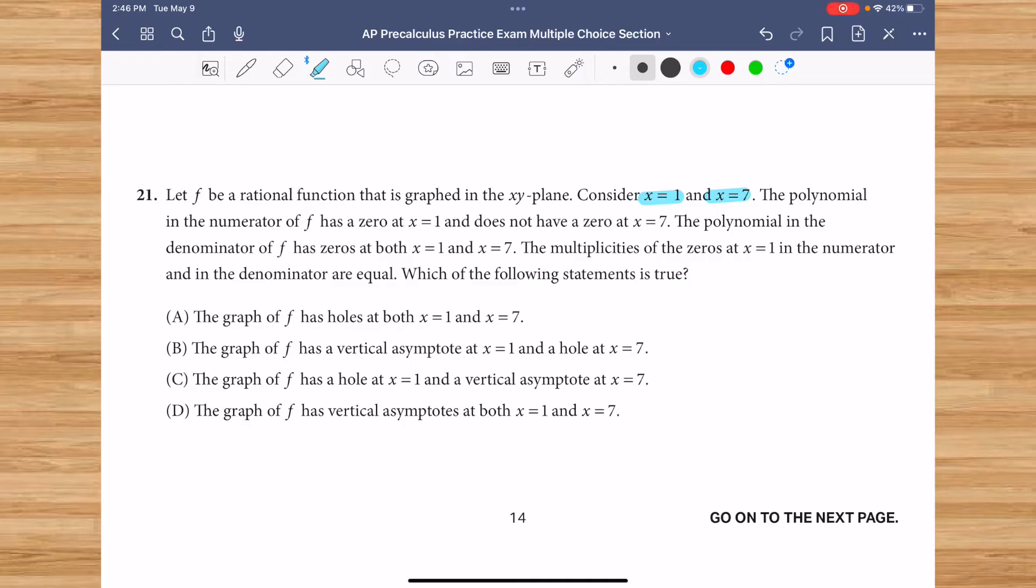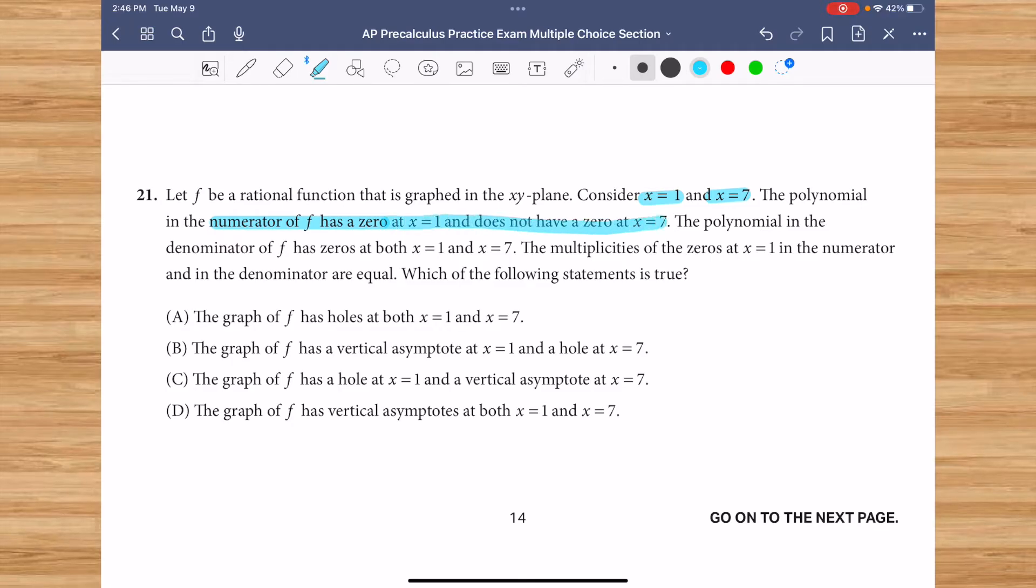The polynomial in the numerator of f of x has a 0 at 1 and does not have a 0 at 7.